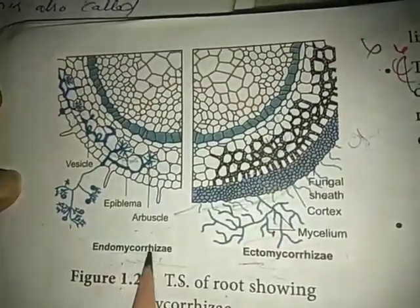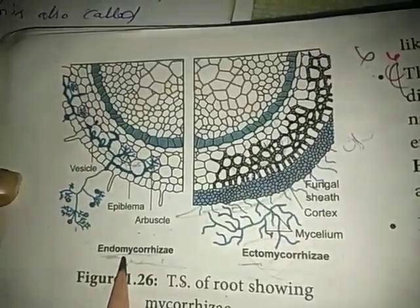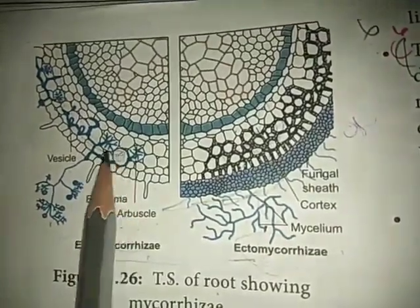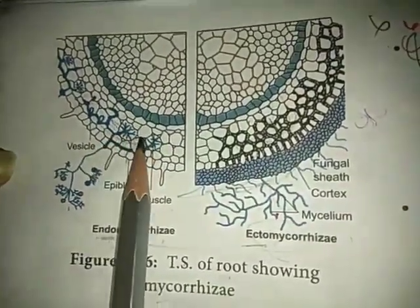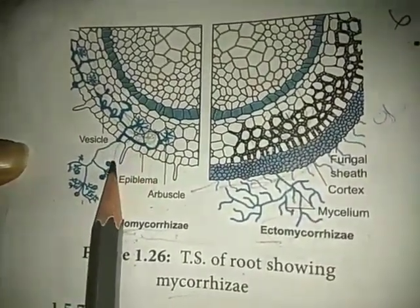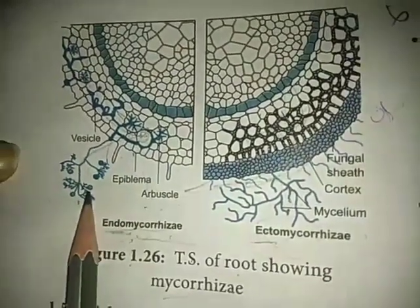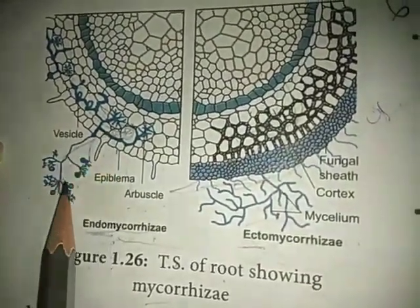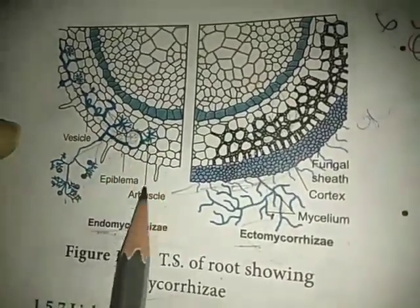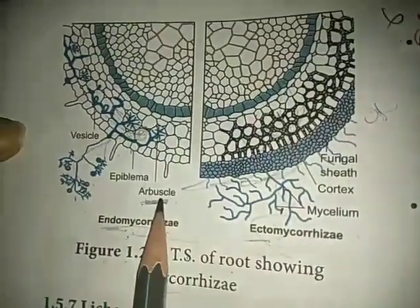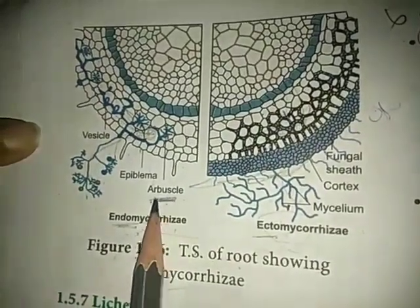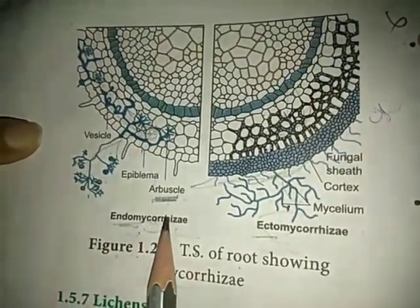In endomycorrhizae, the hyphae grow mainly inside the root, penetrating the outer cortical cells of the plant root. Only a small portion of the mycelium is found outside the root. This form is also called arbuscular mycorrhizae, or VAM — vesicular arbuscular mycorrhizae — which is present in endomycorrhizae.